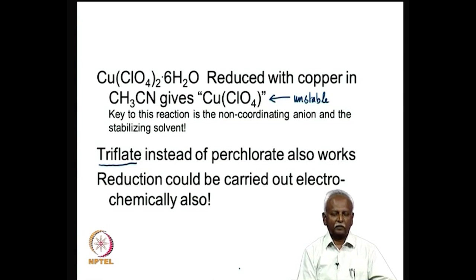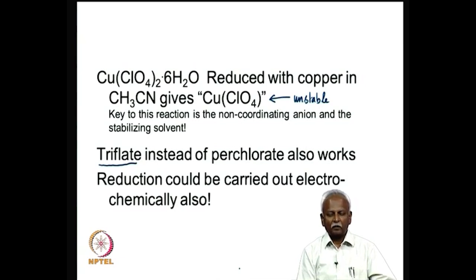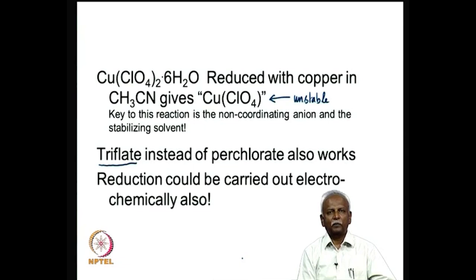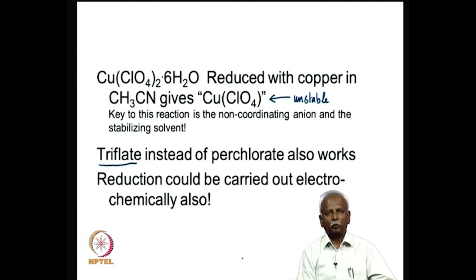The copper and silver salts are reasonably stable but cannot be used extensively because they tend to decompose. The reduction can also be carried out electrochemically — if you use two copper electrodes and pass current in the presence of acetonitrile and an olefin, a copper(2+) sulfate solution can be reduced by electrolysis with copper electrodes. The anode and cathode get coated with the copper(I) compound, especially if the solvent is sufficiently stabilizing, giving very good yields of the copper(I) complex.